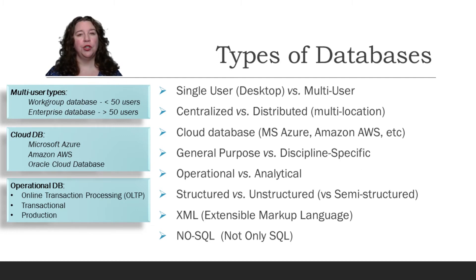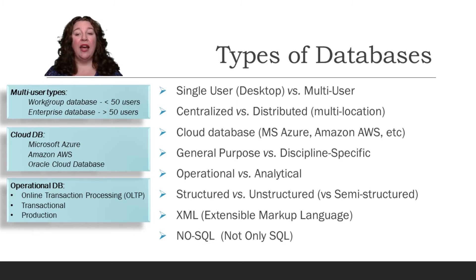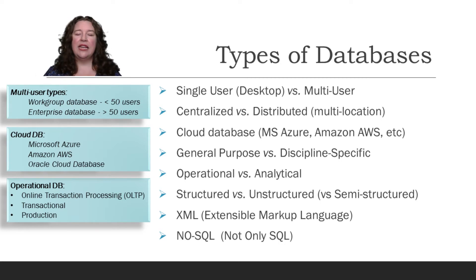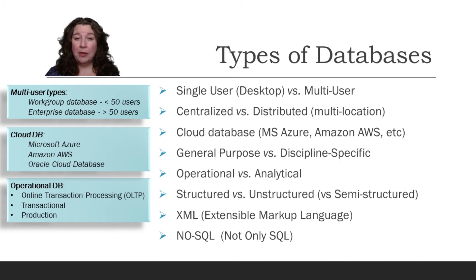We can have a structured versus unstructured or even semi-structured database, depending on how you want your data structured with respect to the database management system design. An unstructured database is more like the big data NoSQL type, as opposed to structured relational databases. You can also store data as XML, a markup language that allows some differences in how data is stored. We'll get into some big data NoSQL database designs in this chapter.